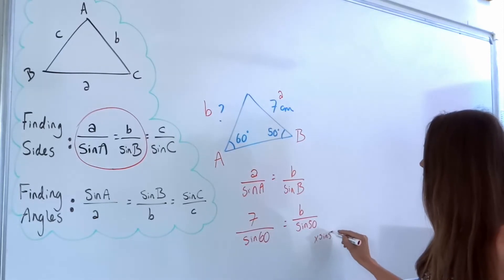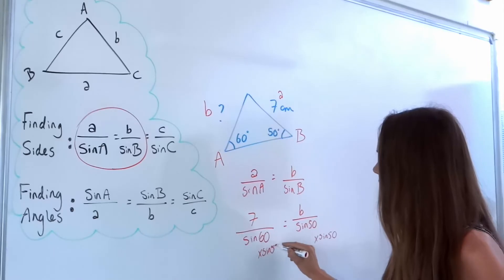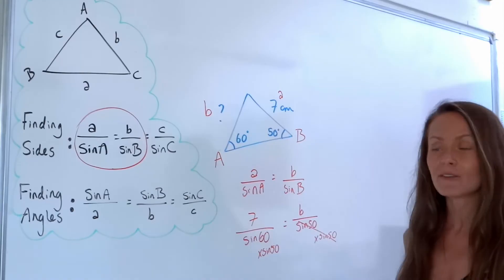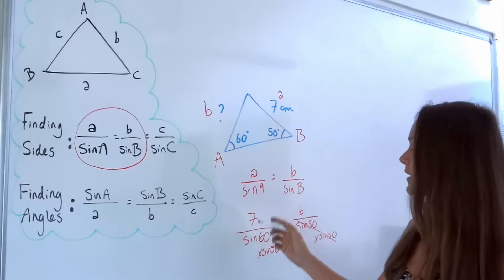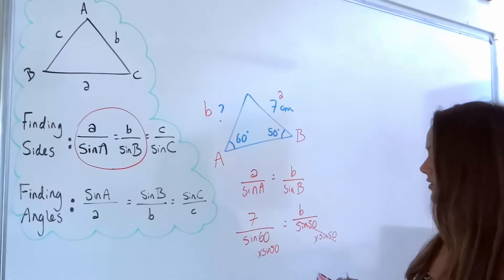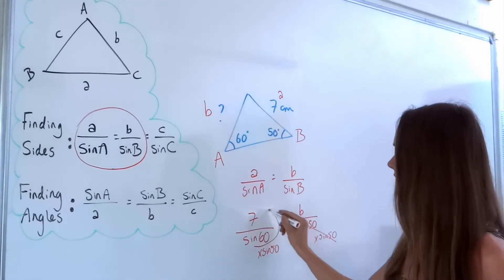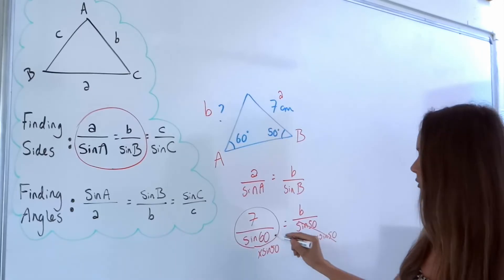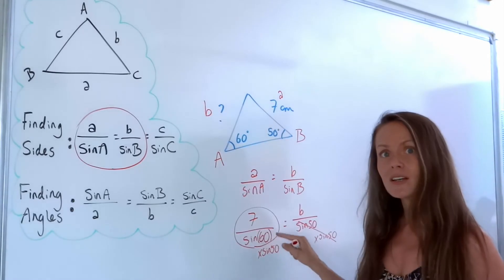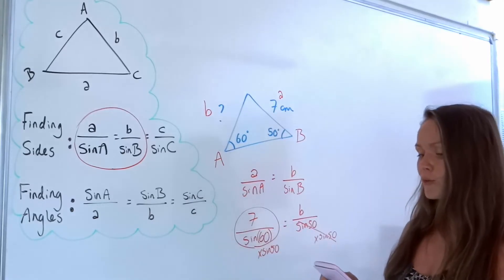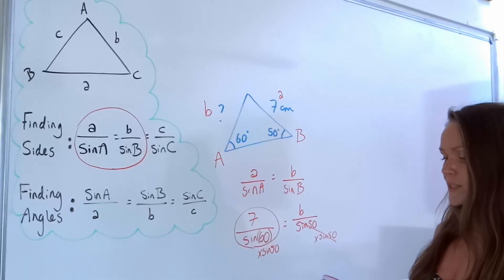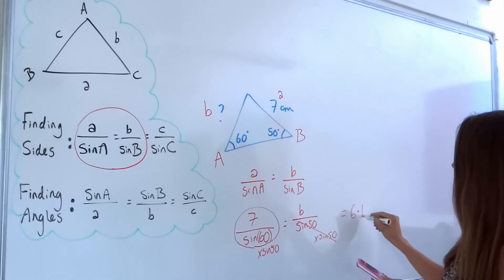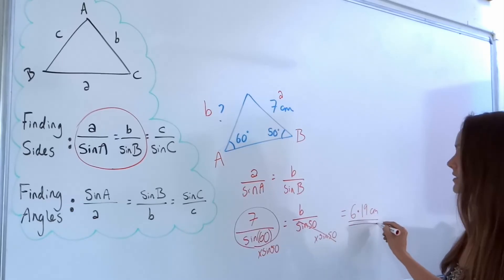Remember to multiply both sides of the equation to keep it balanced. On the right-hand side that just cancels, leaving one B. On the left-hand side, type the fraction into the calculator. If you're using the fraction button, make sure you close the brackets after the 60 degrees before multiplying by sine 50. Rounded to three significant figures, I get 6.19 centimetres.